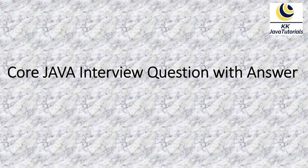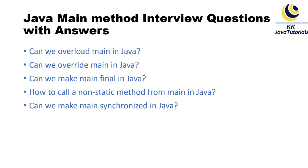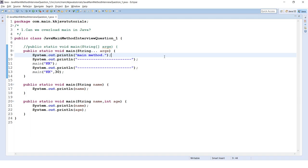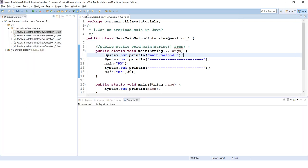Welcome to Core Java interview questions with answers. In this video tutorial we will discuss five important questions, all related to the main method in Java. We will cover: can we overload or override the main method, can we make it final, how to call a non-static method from main, and can we make it synchronized. We'll go through each with examples in Eclipse.